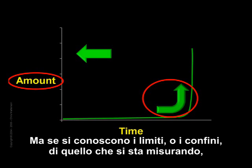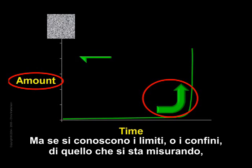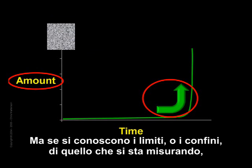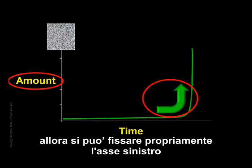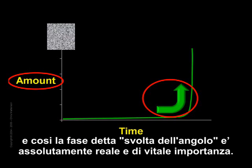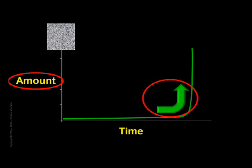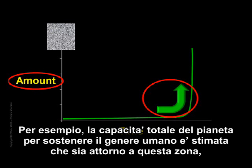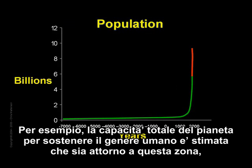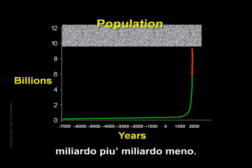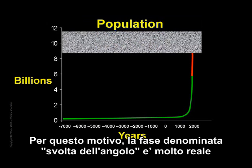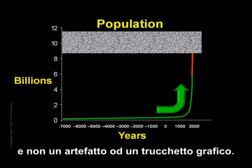But if we know the limits, or boundaries, of what we are measuring, then we can fix the left axis, and the turn-the-corner stage is absolutely real and vitally important. For example, the total carrying capacity of the Earth for humans is thought to be somewhere in this zone, give or take a few billion. Because of this, the turn-the-corner stage is very real, and not an artifact of graphical trickery.